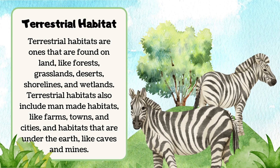Terrestrial habitat. Terrestrial habitats are ones that are found on land, like forests, grasslands, deserts, shorelines, and wetlands. Terrestrial habitats also include man-made habitats like farms, towns, and cities, and habitats that are under the earth like caves and mines.